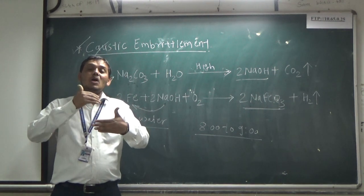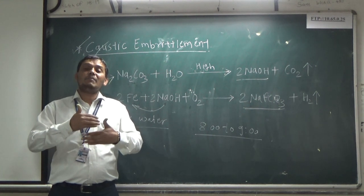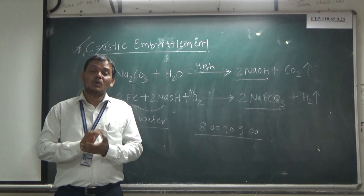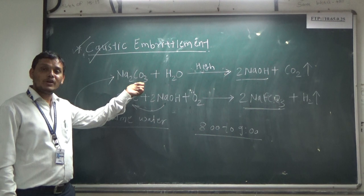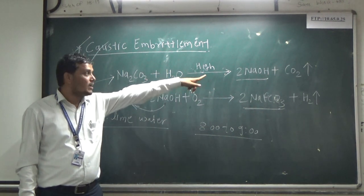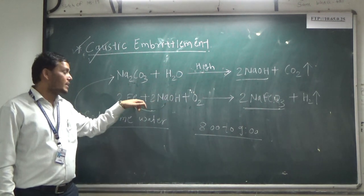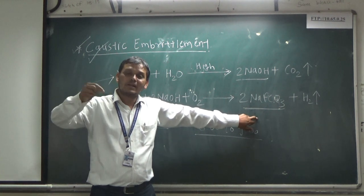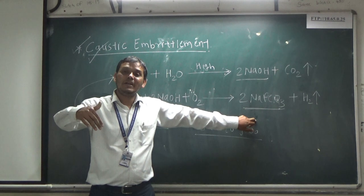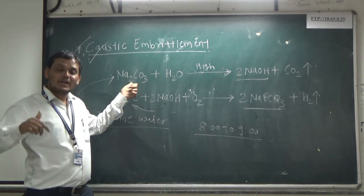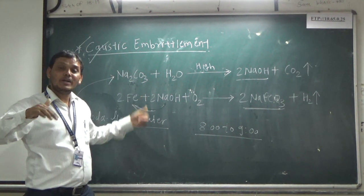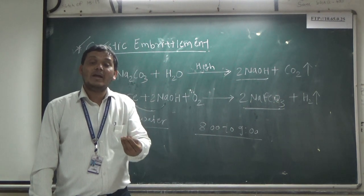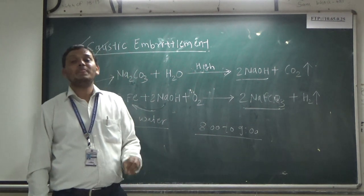To recap the whole concept: Caustic embrittlement is caused due to highly alkaline conditions of the water. Soda-lime water containing unreacted sodium carbonate undergoes hydrolysis at high pressure, converting to NaOH. This NaOH reacts with the boiler metal, forming sodium ferrite, making the metal surface brittle and creating small capillary-size pores. It can be prevented by using sodium phosphate instead of sodium carbonate, adding organic chemicals like lignin and tannin to block minor cracks, and adjusting the pH of water to between 8 and 9.